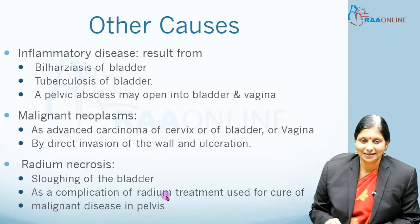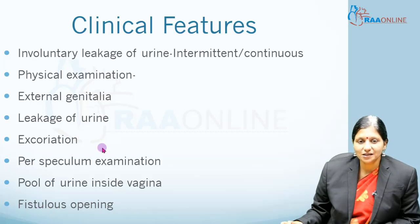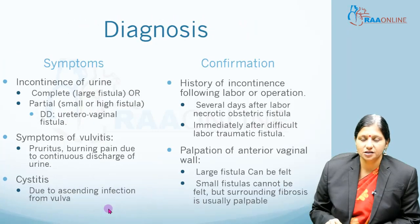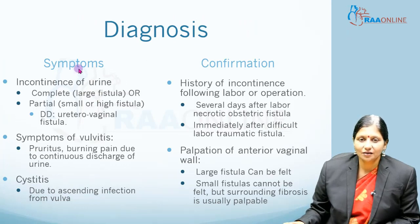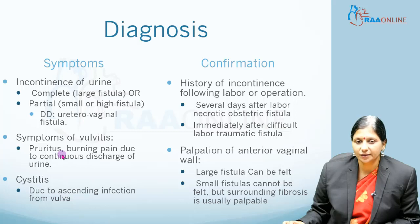Fistulas present as involuntary leakage of urine. On physical examination we assess the external genitalia for urine leakage and excoriation of the surrounding perineal skin. On per speculum examination we see a pool of urine inside the vagina, and sometimes we can identify the site and number of fistulas on Sims speculum examination. Patients can be completely incontinent (large fistulas) or partially incontinent (small or high fistulas), and they complain of vulval pruritus and burning pain due to continuous urine discharge, and cystitis due to ascending infection.